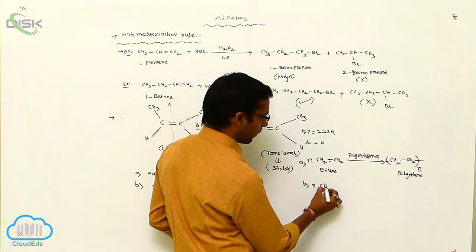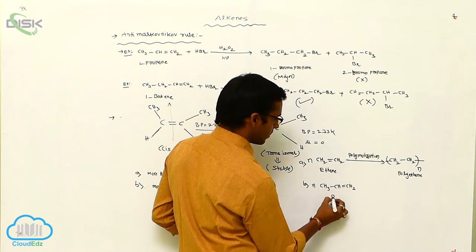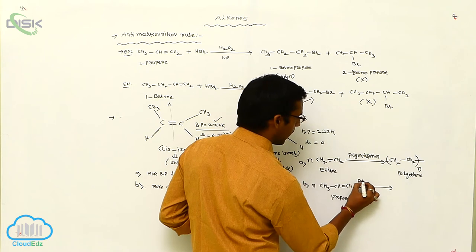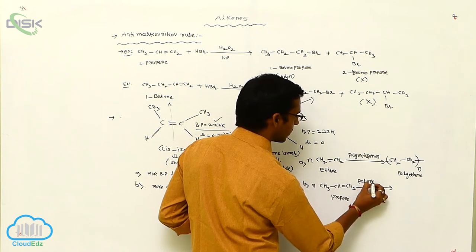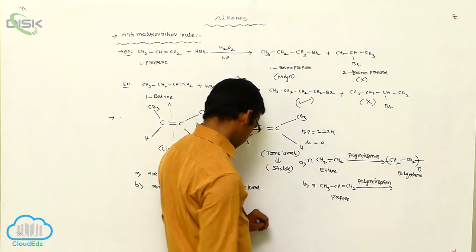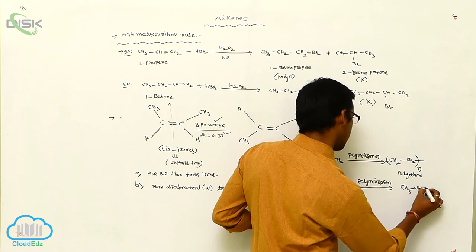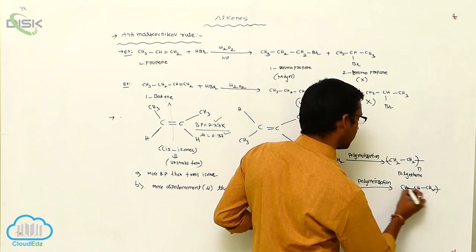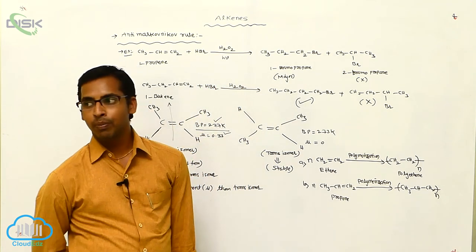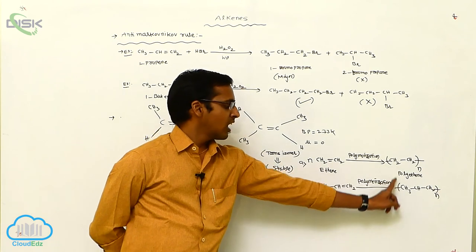Similarly, n number of propene molecules — CH3–CH double bond CH2 — undergo polymerization to give polypropene, written as (CH3–CH–CH2)n. These alkenes are involved in the polymerization process and give polymers.